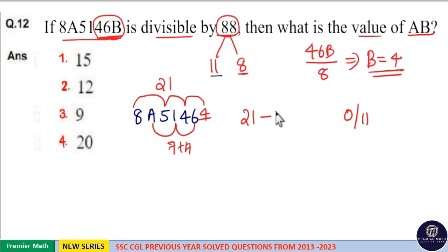21 minus 7 plus A means 21 minus 7 minus A should be 0 or 11. 21 minus 7 is 14, so 14 minus A should be 0 or 11.